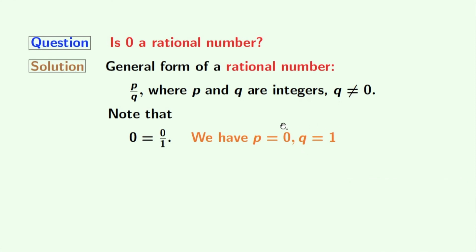Look that we have obtained P and Q are integers and Q is non-zero. So, according to this fact, we can conclude that zero is a rational number.